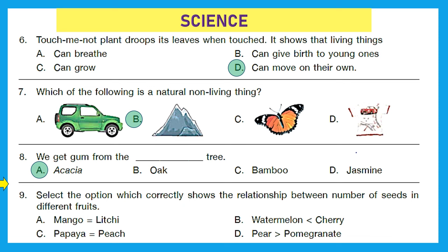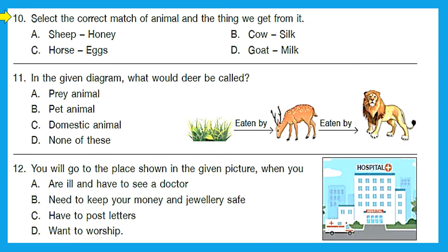Question 9: select the option which correctly shows the relationship between the number of seeds in different fruits. Option A shows mango equals lychee — meaning the number of seeds in mango equals the number in lychee, and both have only one seed. So the correct equation is in option A, because watermelon has more seeds than cherry, papaya has more seeds than peach, and pomegranate has more seeds than pear.